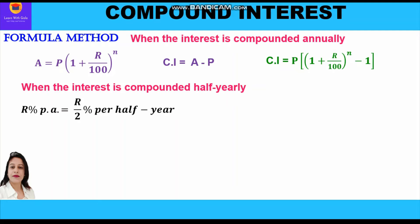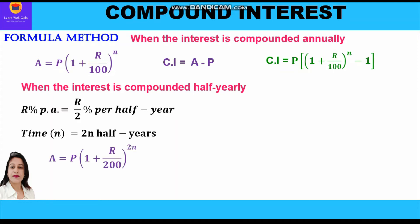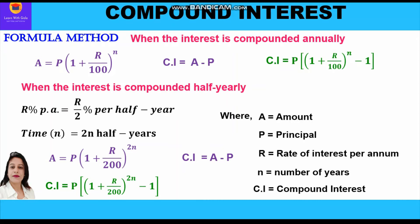When the interest is compounded half-yearly, the rate percent per annum is divided by 2, giving r/2 percent per half-year, and the time period is multiplied by 2, giving 2n half-years. Accordingly the formula changes: Amount = P × (1 + r/200)^(2n), and CI = P × [(1 + r/200)^(2n) − 1]. Here A is amount, P is principal, r is rate of interest per annum, n is number of years, and CI is compound interest.